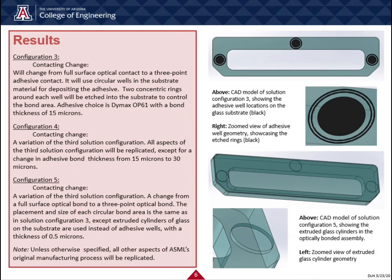Our motivation for the three contacting configurations came from research into the effect of different bond types that have stress concentrations in various optics. ASML's current contacting method relies on a full surface optical contact, which works by using molecular van der Waals forces to bond the two glass surfaces when the surface roughness is low enough. However, overall RMS shape error in the window lens or substrate can induce stress for this type of bonding, due to the window lens being considerably thinner than the substrate. The thinner glass material will be forced to conform to the shape of the substrate, inducing pockets of stress in the material. Our three contacting solution configurations are designed to minimize this effect, but also provide data to help understand it better, provided they can be fabricated and tested.